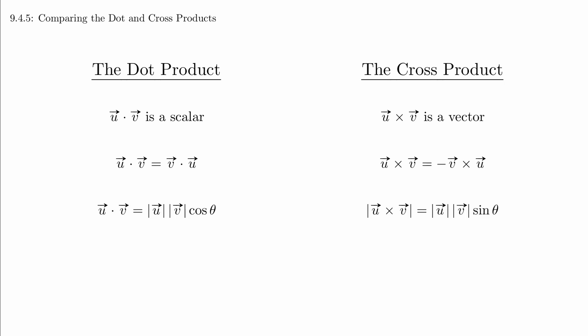The dot product is related to the cosine of the angle between the vectors, and the cross product is related to the sine of the angle between the vectors. We can see that these formulas are otherwise very similar to each other.